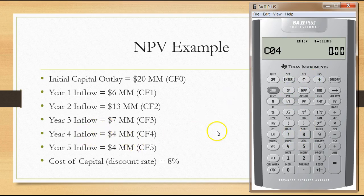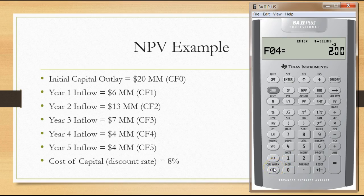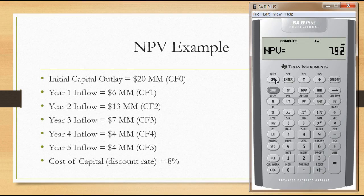Here's where we make a change. Cash flow number four is four million as before, but instead of setting the frequency to one, we put two. This accounts for both cash flows in years four and five — four million dollars happens twice in a row. With the frequency set to two, we don't need to enter a fifth cash flow separately. We come out, go back to NPV, enter our discount rate of eight, hit the down arrow, and compute — we get the same answer: 7.92 million dollars.